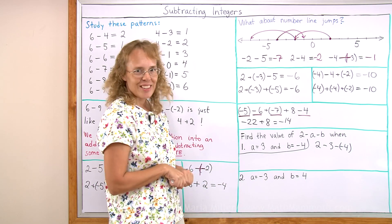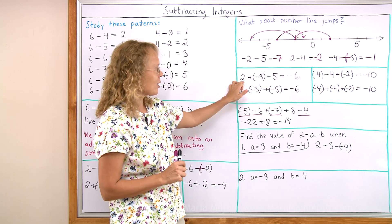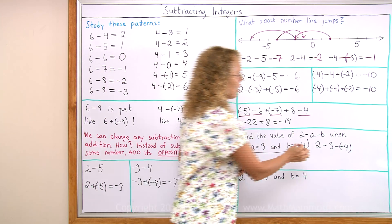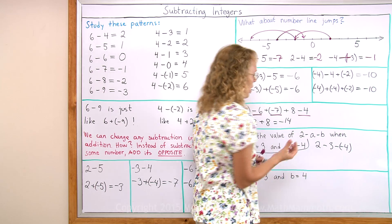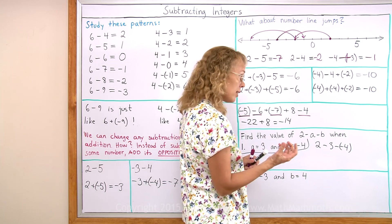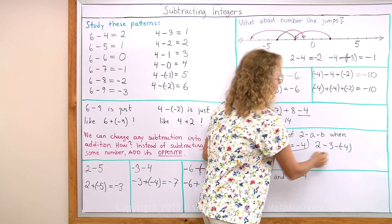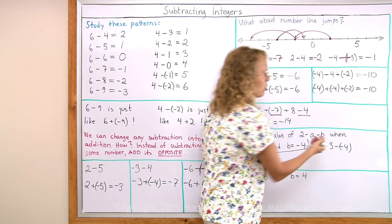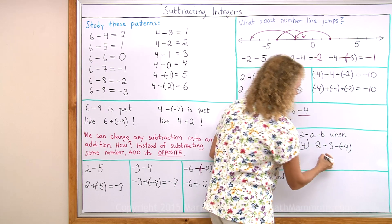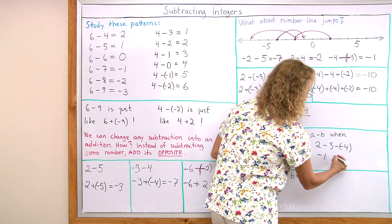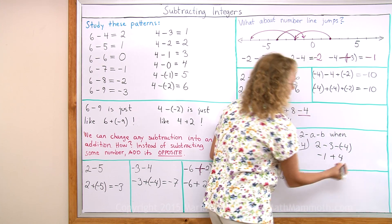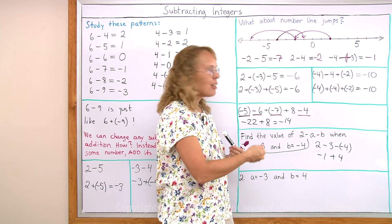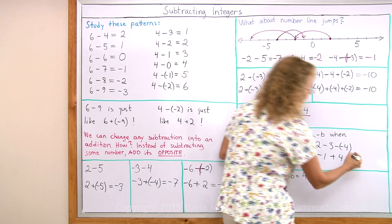Again, there are two ways to go about this. I can change everything into additions, or I can deal with it one step at a time. Since there are only two operations here, I think I will deal with it one step at a time. 2 minus 3 is pretty easy — that's negative 1. Then this one I'm going to change into an addition using my shortcut of double negative changing into a positive. So I change it into negative 1 plus 4, and that is 3.